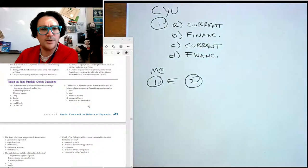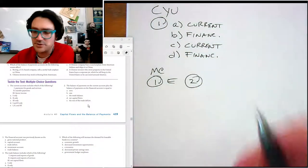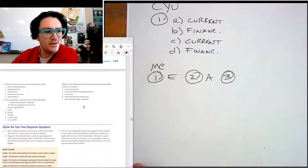Number two, balance of payments on the current plus the balance of payments on the financial has to equal, well, should equal zero. I just told you that in reality, it's a little more messy.